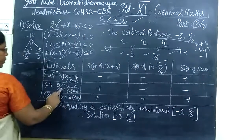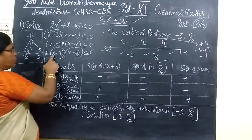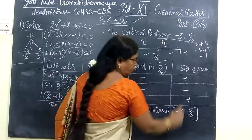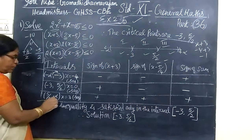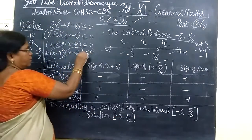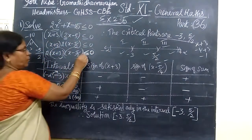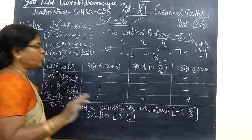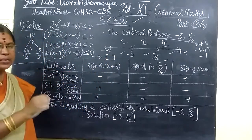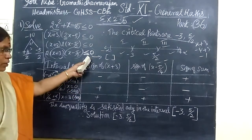You write x minus 4, you get minus minus plus. Then after that, in between minus 3 and 5 by 2, take any number. 0 is easier for you. So, you take 0. So, 0 plus 3 positive, 0 minus 5/2 negative. So, plus 1 into minus. You get minus. And similarly, you take the third interval, you get positive. Here is the closed interval.